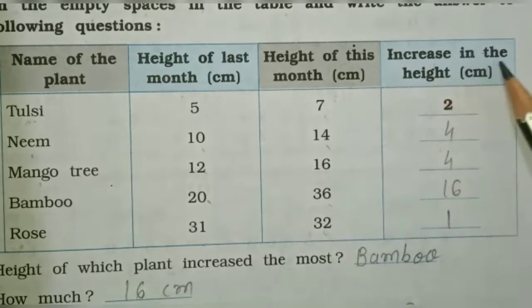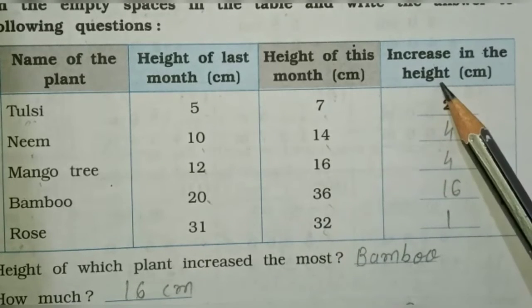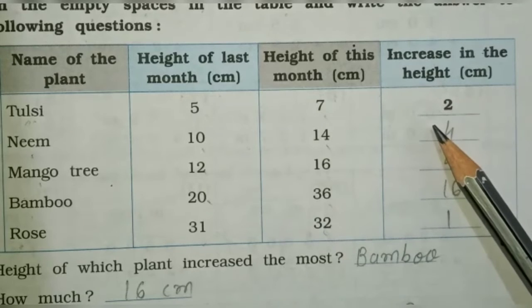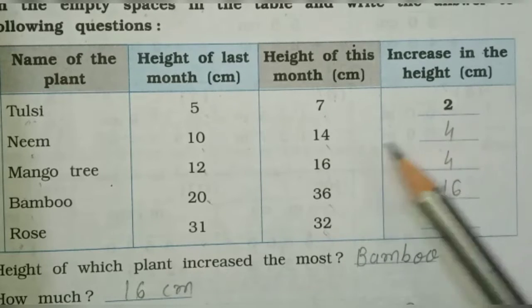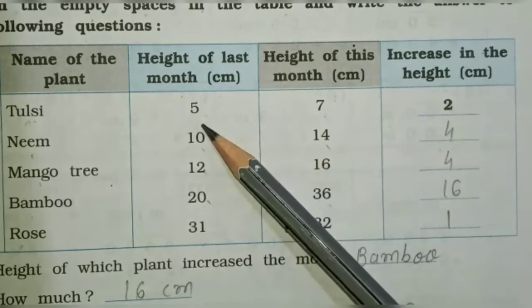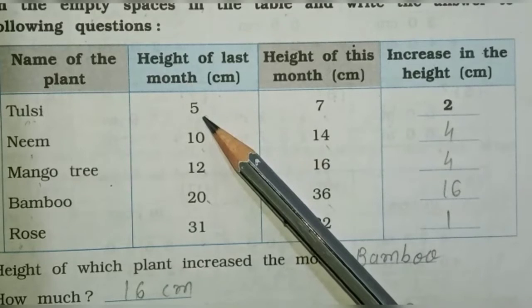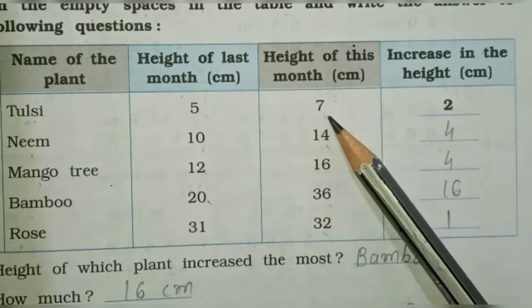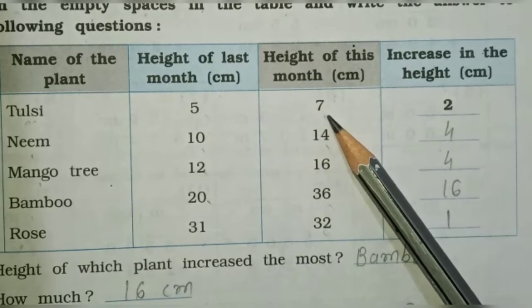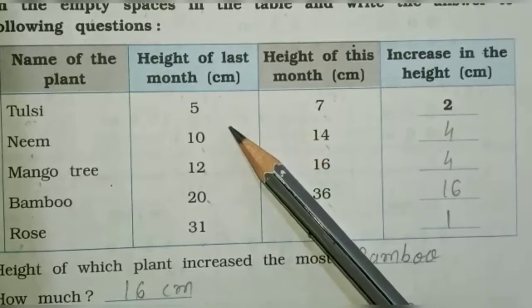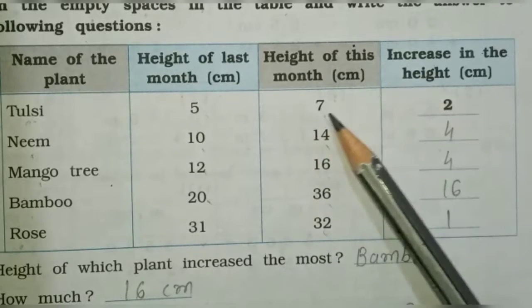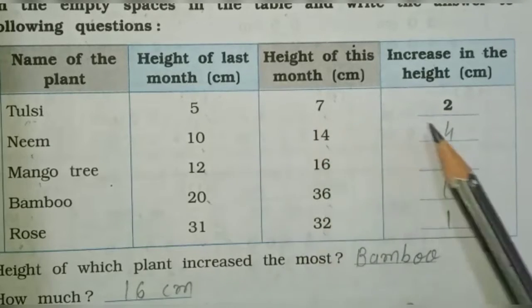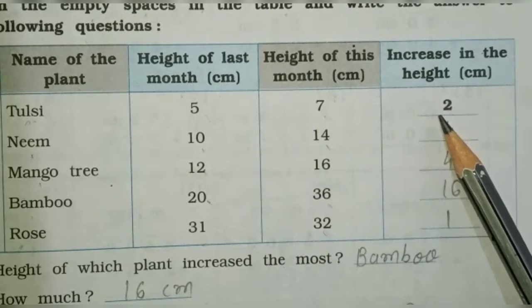Next column: increase in height — yani, how much have the plants grown, we need to write that. For the first one, tulsi was 5 centimeters last month and 7 centimeters this month, so 7 minus 5 is equal to 2 centimeters increase.